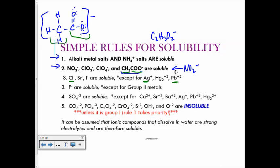Everything else is insoluble: carbonates, phosphates, oxalates, chromates, sulfides, hydroxides, and oxides are always insoluble — unless they're with group 1 (alkali metals) or ammonium. If they're with group 1 they're soluble; if they're with something else, they're going to be insoluble.